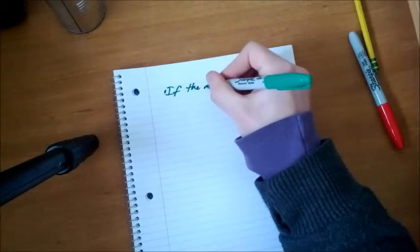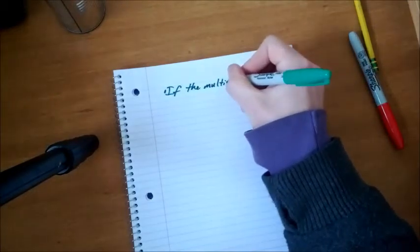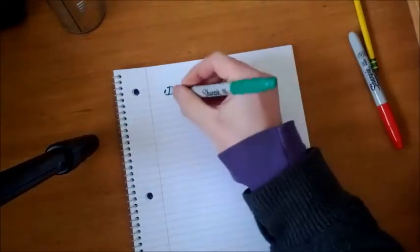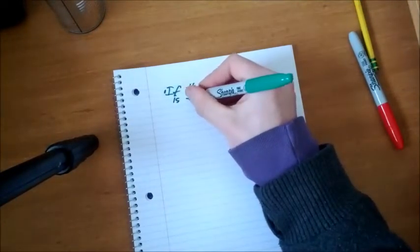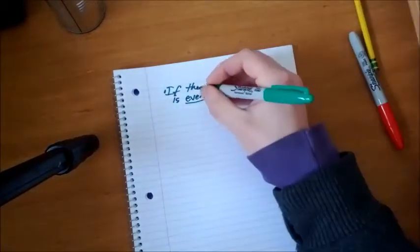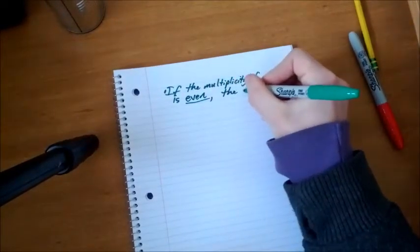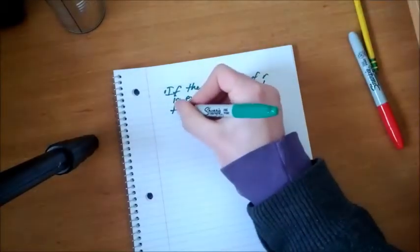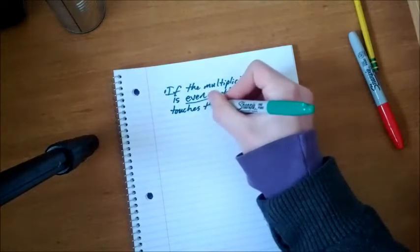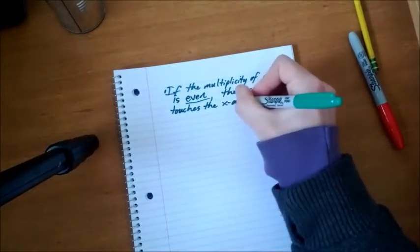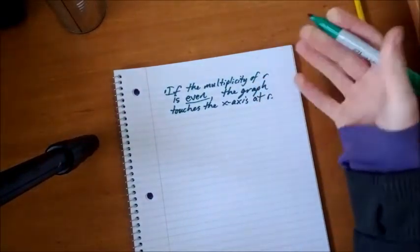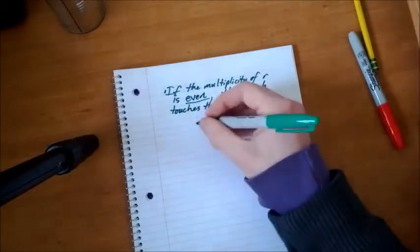If the multiplicity of r is even, then the graph touches the x-axis at r, or the x-intercept that we are talking about with its multiplicity.